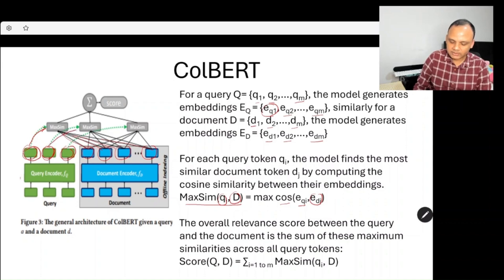Each individual query token interacts with all the document tokens and finds the document providing maximum similarity.